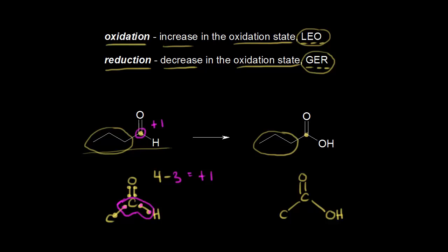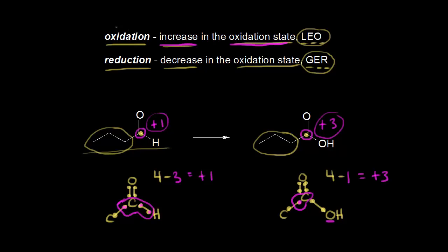What about on the right? Let's put in our bonding electrons — each bond consists of two electrons. Again we think about electronegativity. This carbon on the right is now bonded to an oxygen, so carbon loses those two electrons to oxygen. The top oxygen takes those four electrons, and again we split the carbon-carbon electrons. This time carbon is only surrounded by one electron. Carbon is supposed to have four valence electrons, and from that we subtract the electrons around carbon once we've accounted for electronegativity — that's only one electron. So four minus one gives us an oxidation state of plus three.